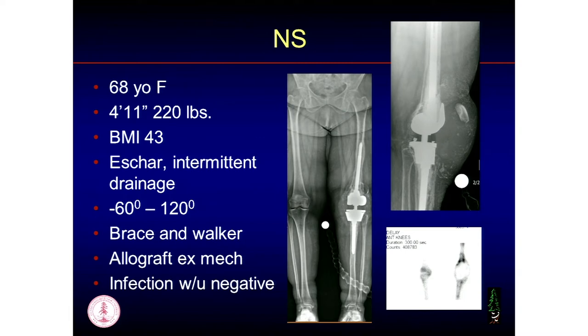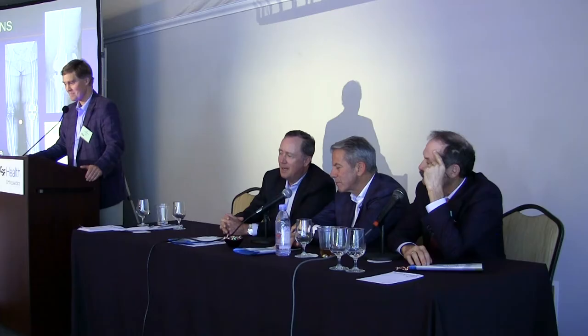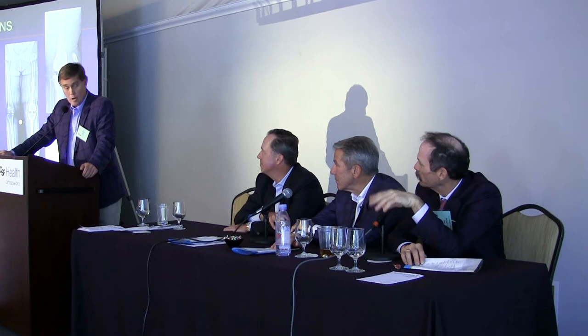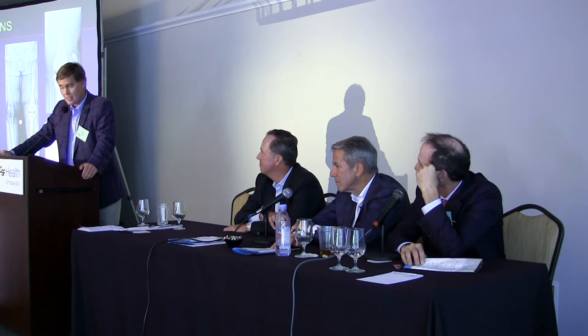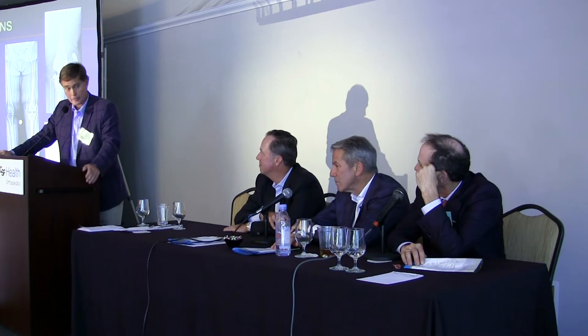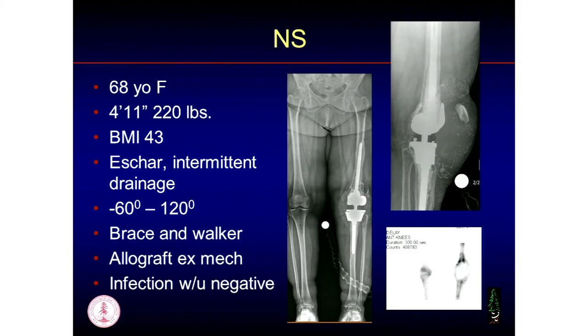What do you make of the drainage? I'm believing this thing is infected regardless of the alpha-defensin. The cell count was less than 500 with about 35 PMNs. It drains directly from the mid-portion of her incision — she tells me this, and she came back once where the eschar was definitely immature, so I believe her that it drains. This is one where it sure seems like it's got to be infected — maybe we're just not catching it, not checking for fungus and other odd organisms. Was this previously infected? It's never been infected.